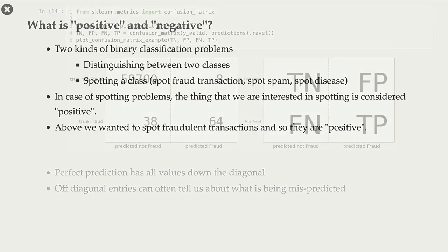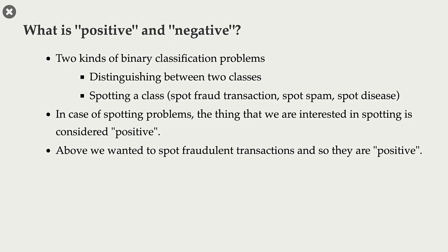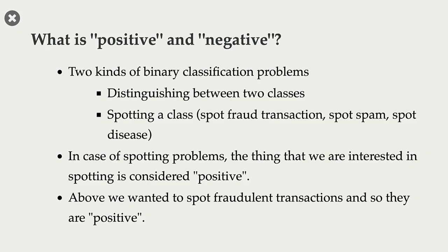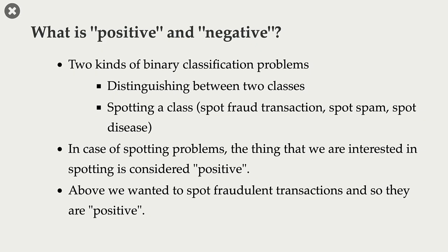Now, at this point, you might be wondering about what is positive and negative. We have been using this terminology: true positives, true negatives, false positives, and false negatives. But what is exactly positive and negative? There are two kinds of binary classification problems. The first one is about distinguishing between two classes, such as distinguishing between cats and dogs. The second kind is about spotting a particular class.